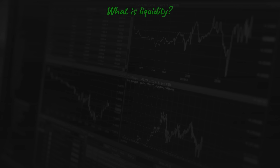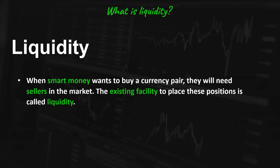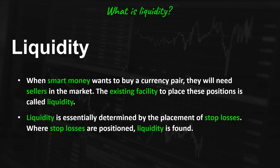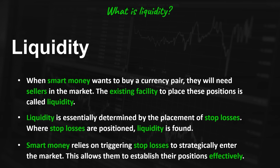What is liquidity? When smart money wants to buy a currency pair, they will need sellers in the market. The existing facility to place these positions is called liquidity. Liquidity is essentially determined by the placement of stop losses. Where stop losses are positioned, liquidity is found. Smart money relies on triggering stop losses to strategically enter the market, which allows them to establish their positions effectively.